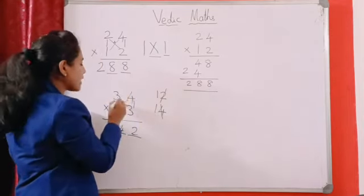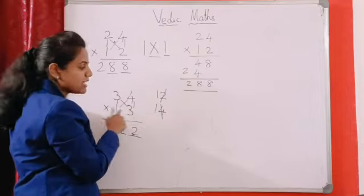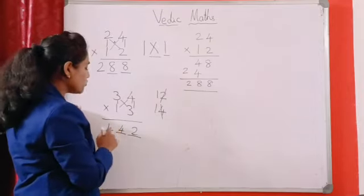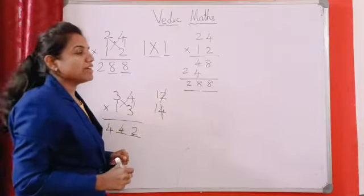So again last step again I. So 3 ones are 3. 3 plus 1, 4. So 442 is your answer.